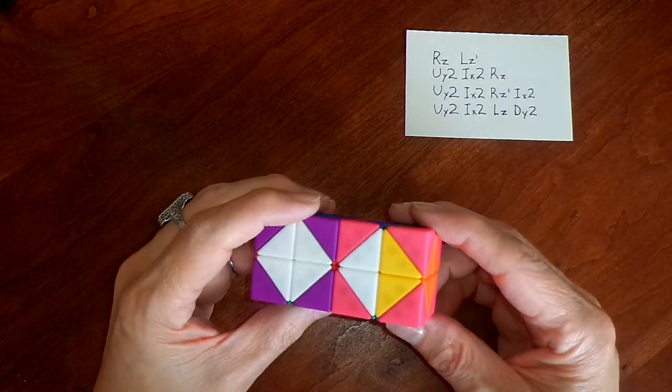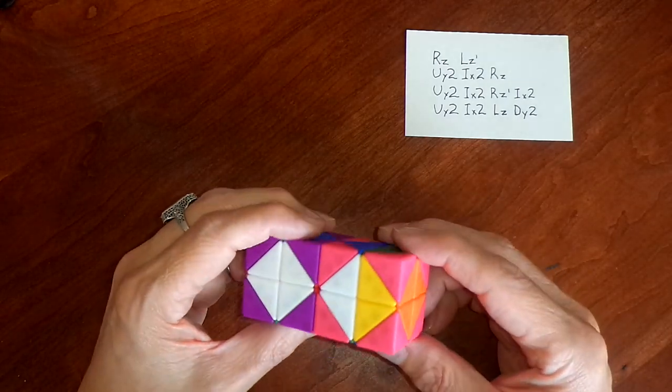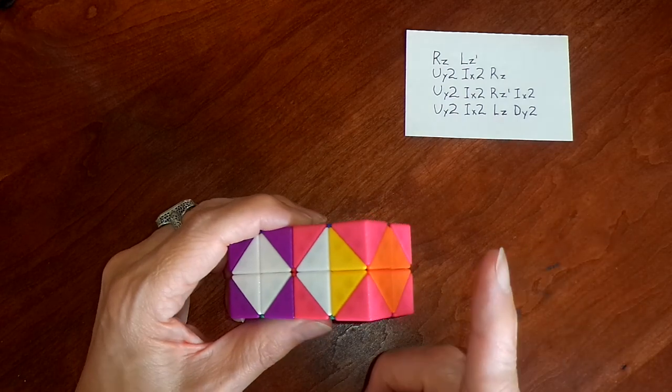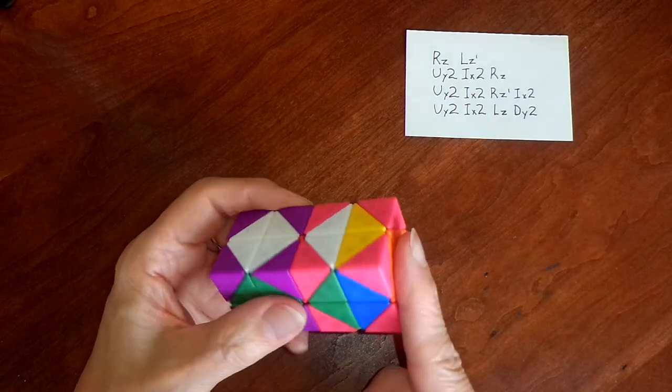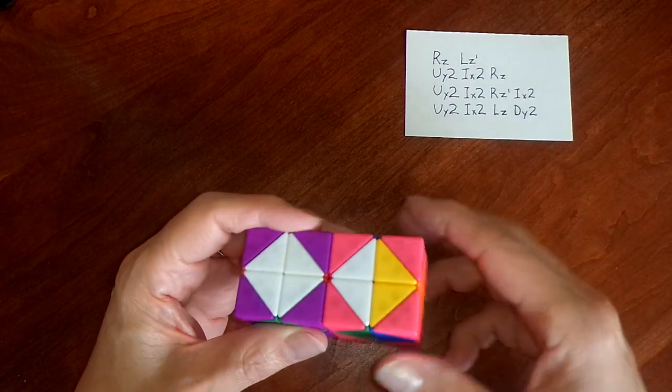Hi, Melinda Green here with a short algorithm for fixing this parity issue you can sometimes get into where one end cap will be twisted 180 degrees. It goes like this.